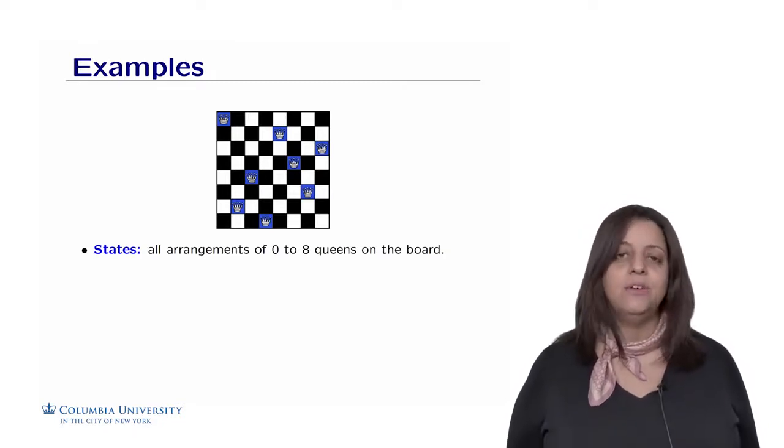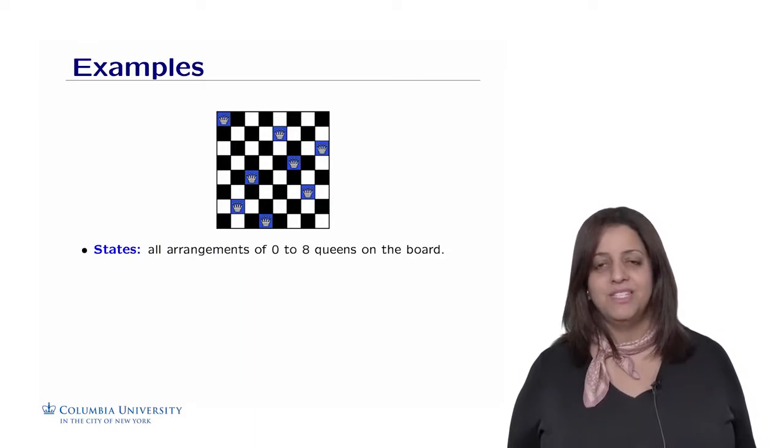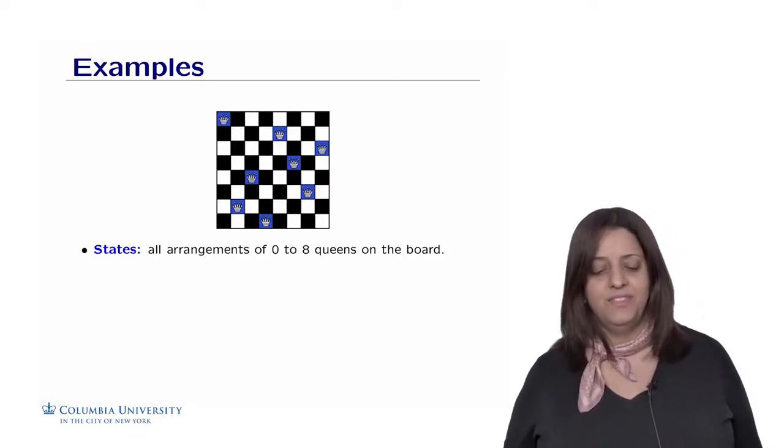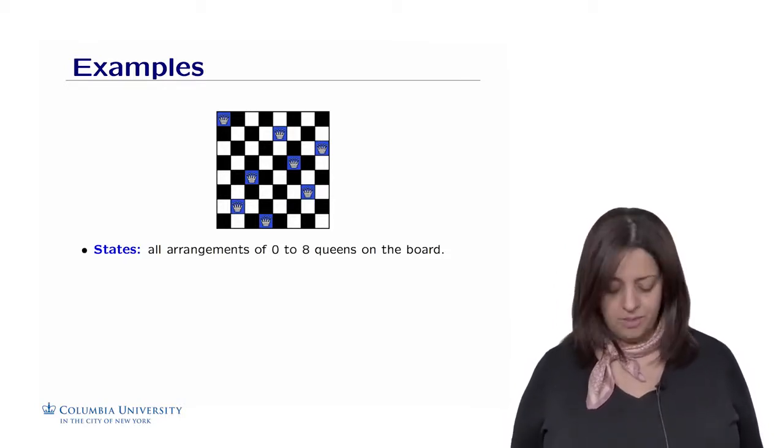So the state is any arrangement of 0 to 8 queens on the board. And you know how much is this. This is 68 times 67 times times 57 possible arrangements of having 0 to 8 queens on the board.